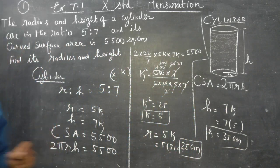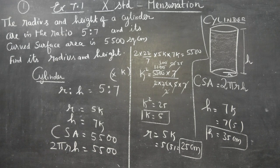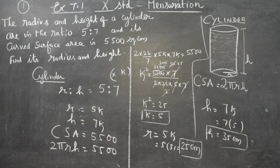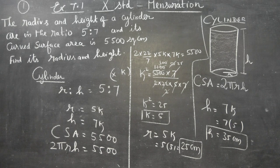In this problem, the first step was to set up the ratio using variable k. Then we used the CSA of a cylinder formula, which is 2πrh. The final answers are: radius = 25 cm and height = 35 cm. Thank you.